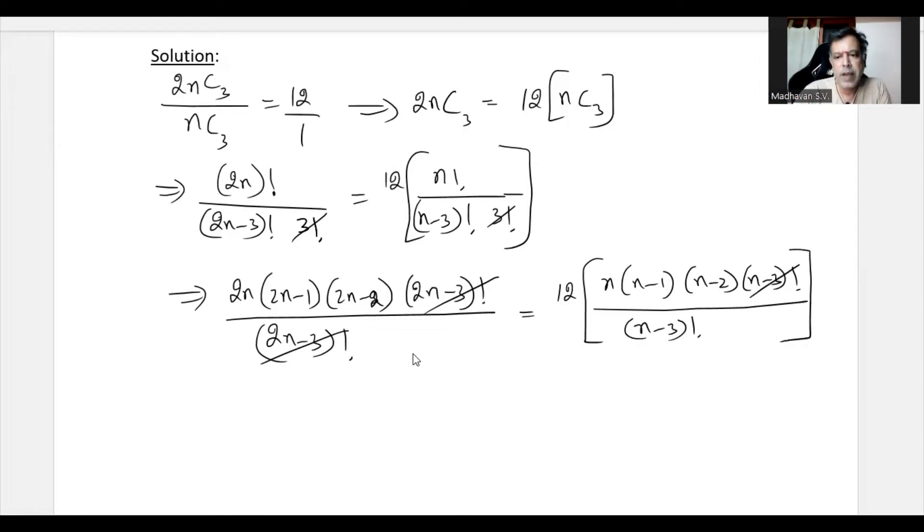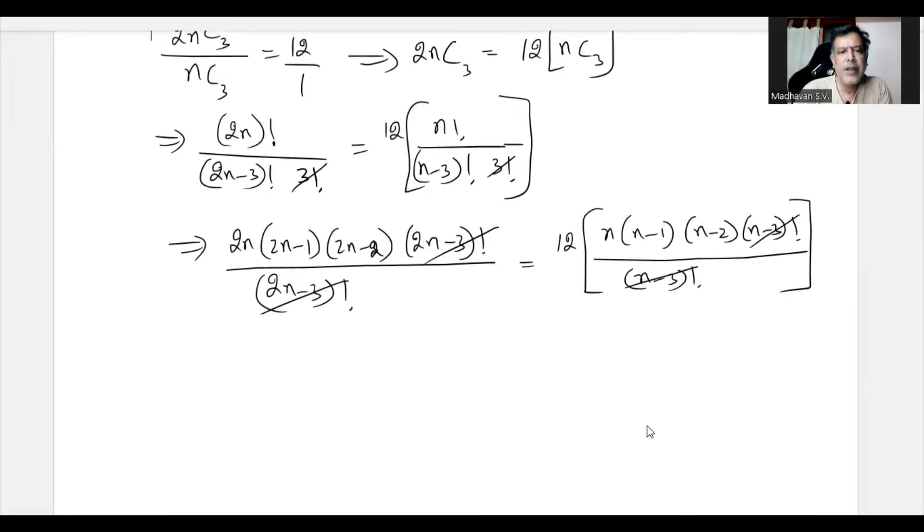Again, this N factorial and N factorial can be cancelled, and if I divide both sides by 2, this 2 will vanish, this will become now 6.